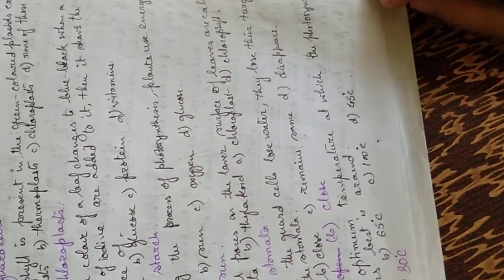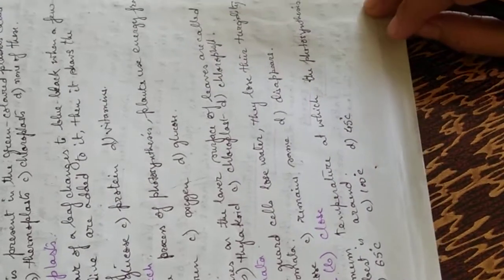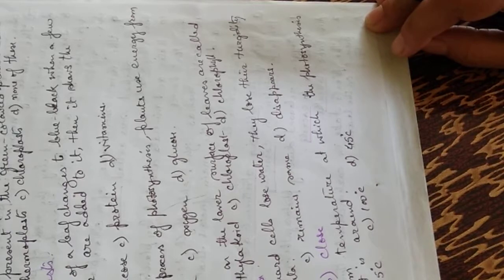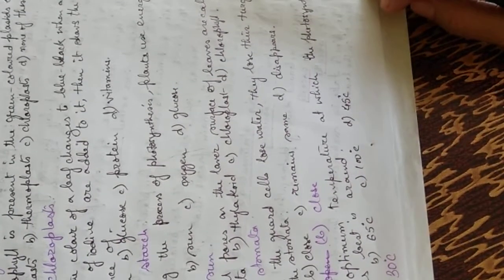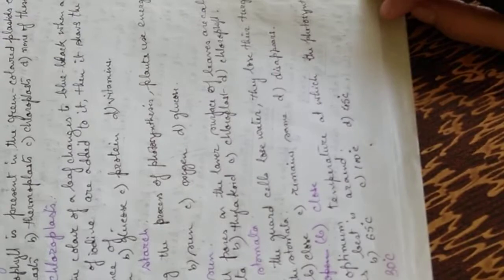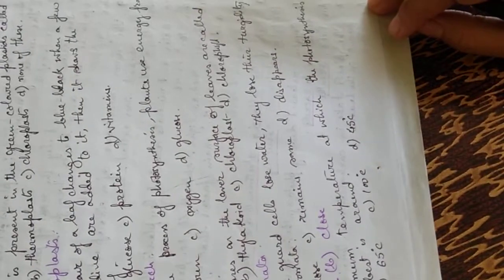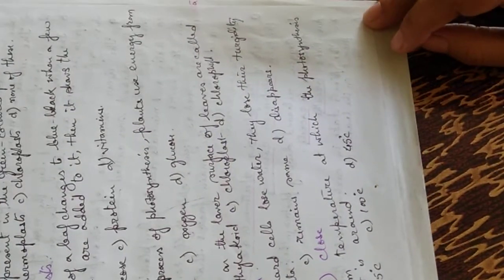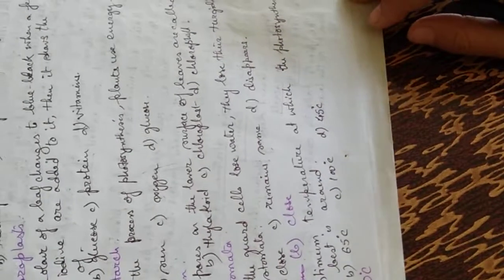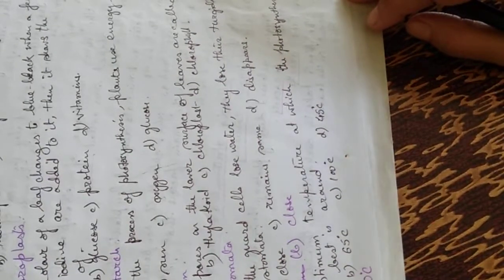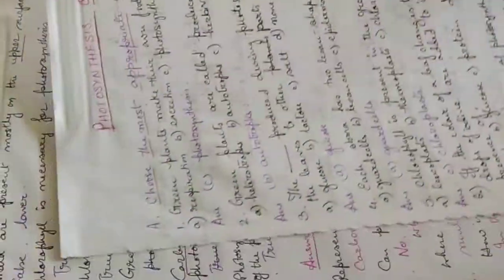The optimum temperature at which the photosynthesis occurs best is around which temperature? Option A is 30 degree centigrade, B is 65, C is 100 degree centigrade, and D is 45. The answer, the optimum temperature is 30 degree Celsius centigrade.